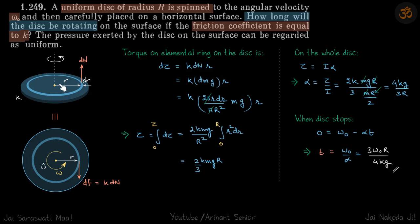We have a uniform disc that is spinning with angular velocity omega 0. The surface at the bottom is rough. We need to find how long the disc will be rotating.